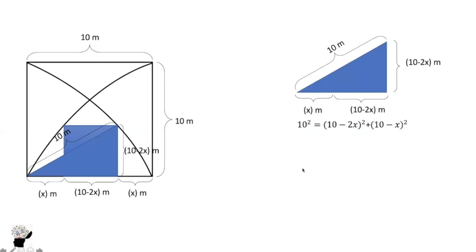Now we are going to expand the bracket. We are going to get 100 equals 100 minus 40x minus 4x² plus 100 minus 20x minus x². So from here we are going to simplify. We are going to get 100 equals 200 minus 60x minus 5x².